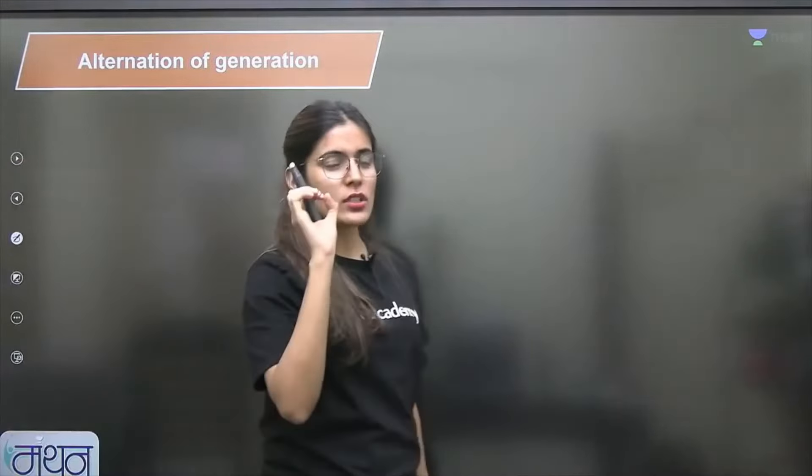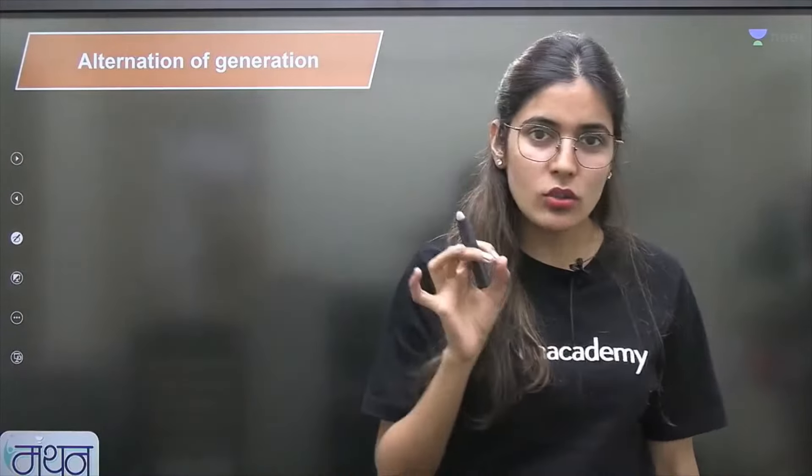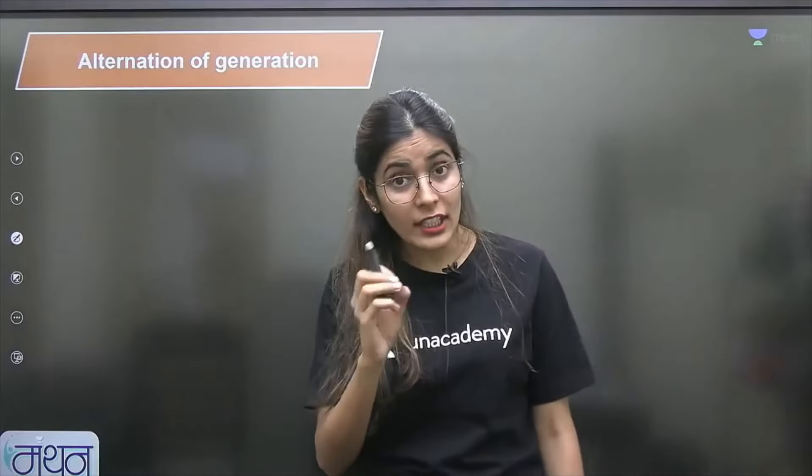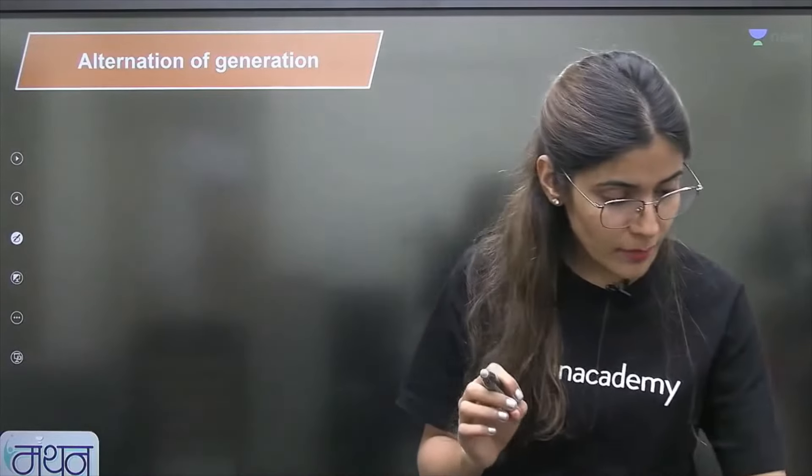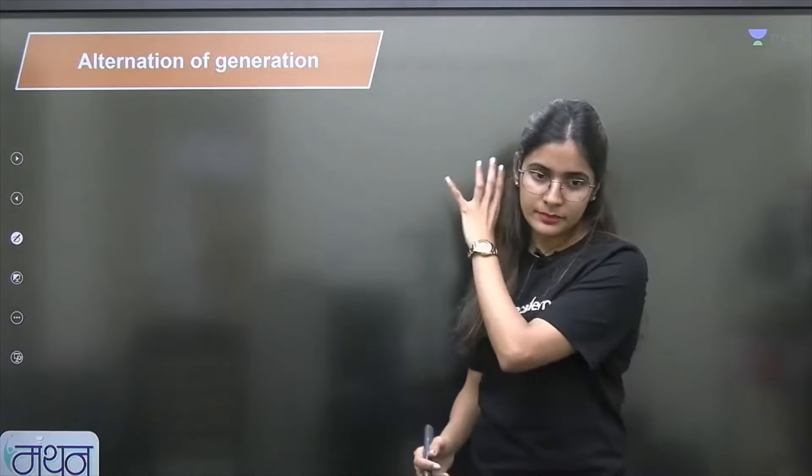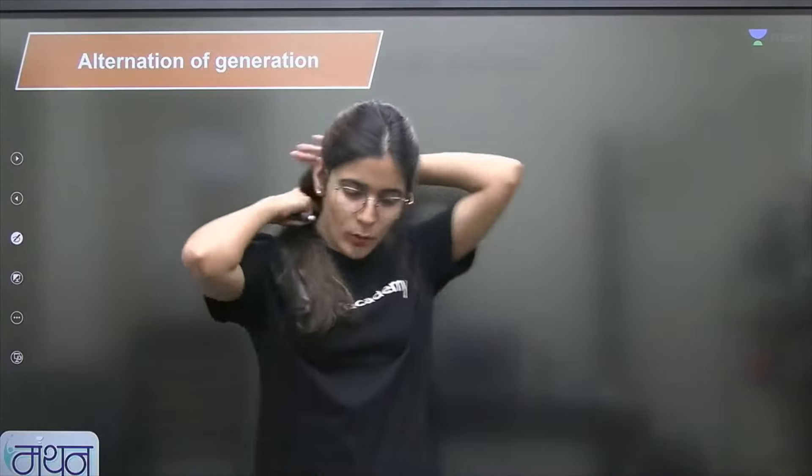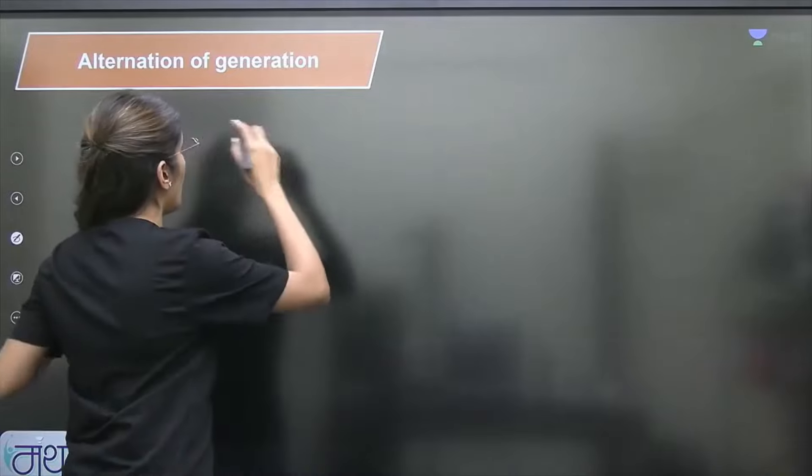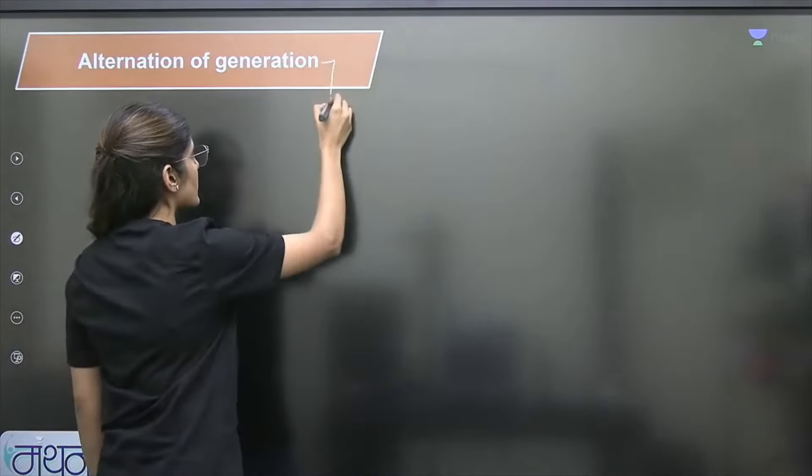Alternation of generation - this is a point where students get confused, but it's very simple. I just want your attention on the board. There's not much to write, you can write comfortably. In alternation of generation, what happens in plant life?